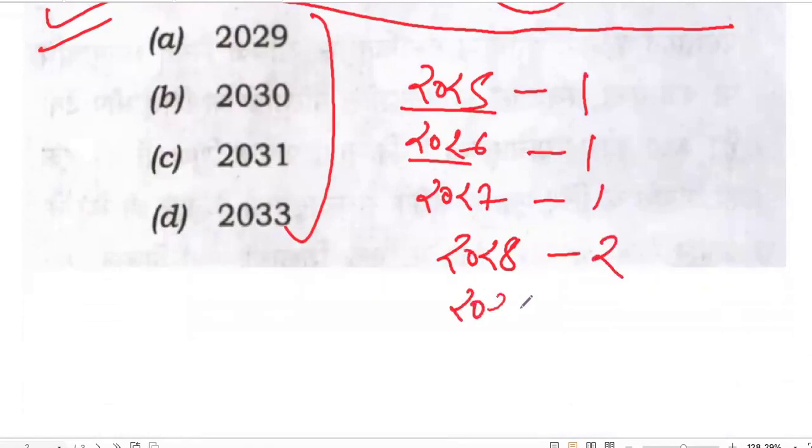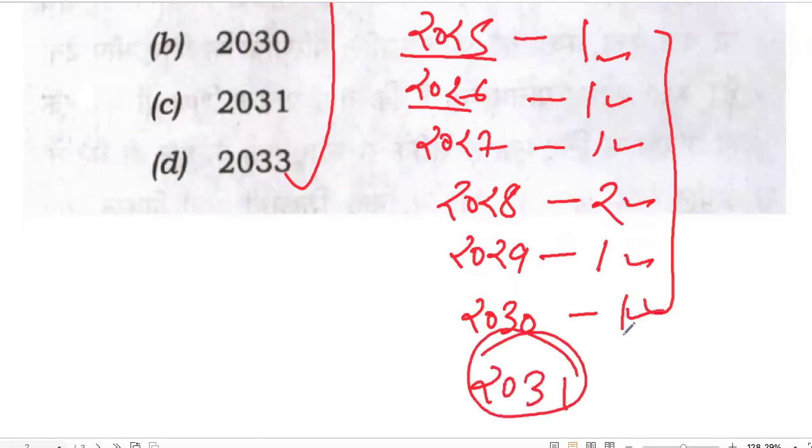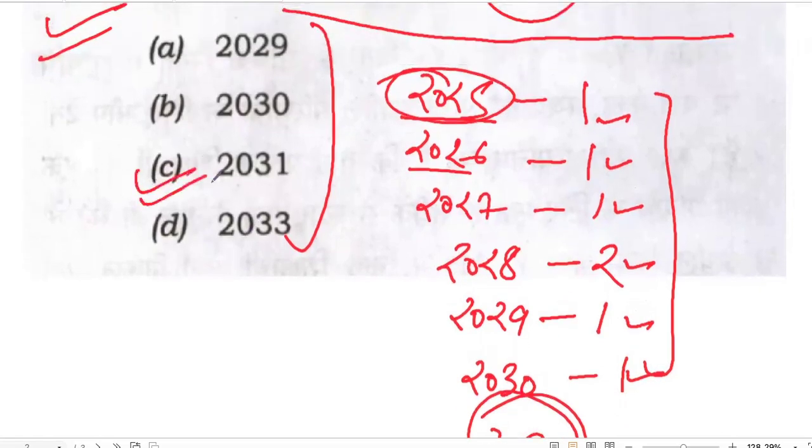2029 is an ordinary year, one odd day. 2030 again one odd day. Now calculate. 7 ban gaya to calendar identical ho gaya. 1 plus 1, 2 plus 1, 3 plus 2, 5 plus 1, 6 plus 1, 7. That means 2031 calendar will be same as 2025. So answer will be C.